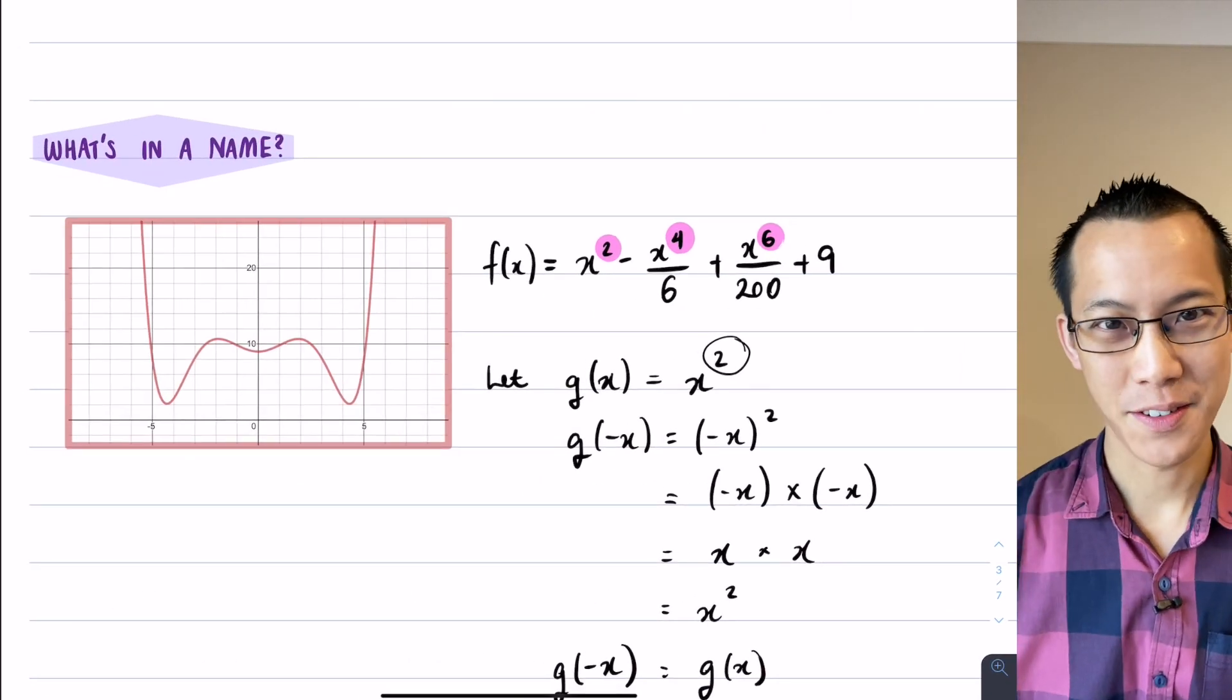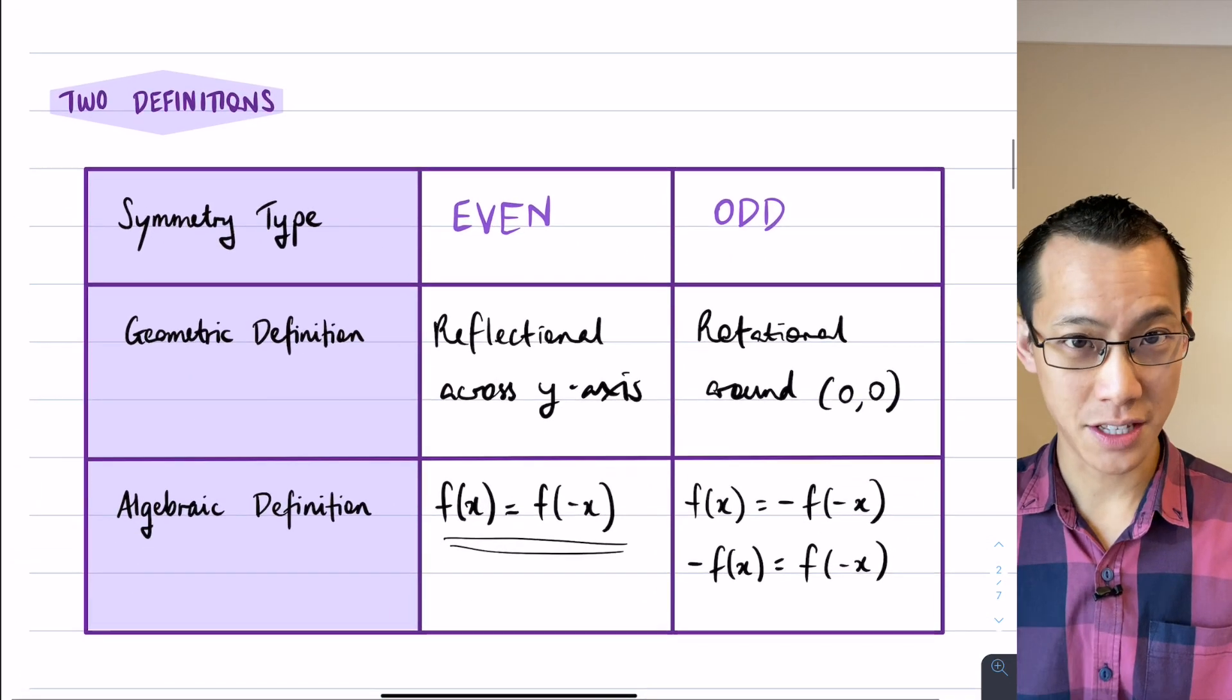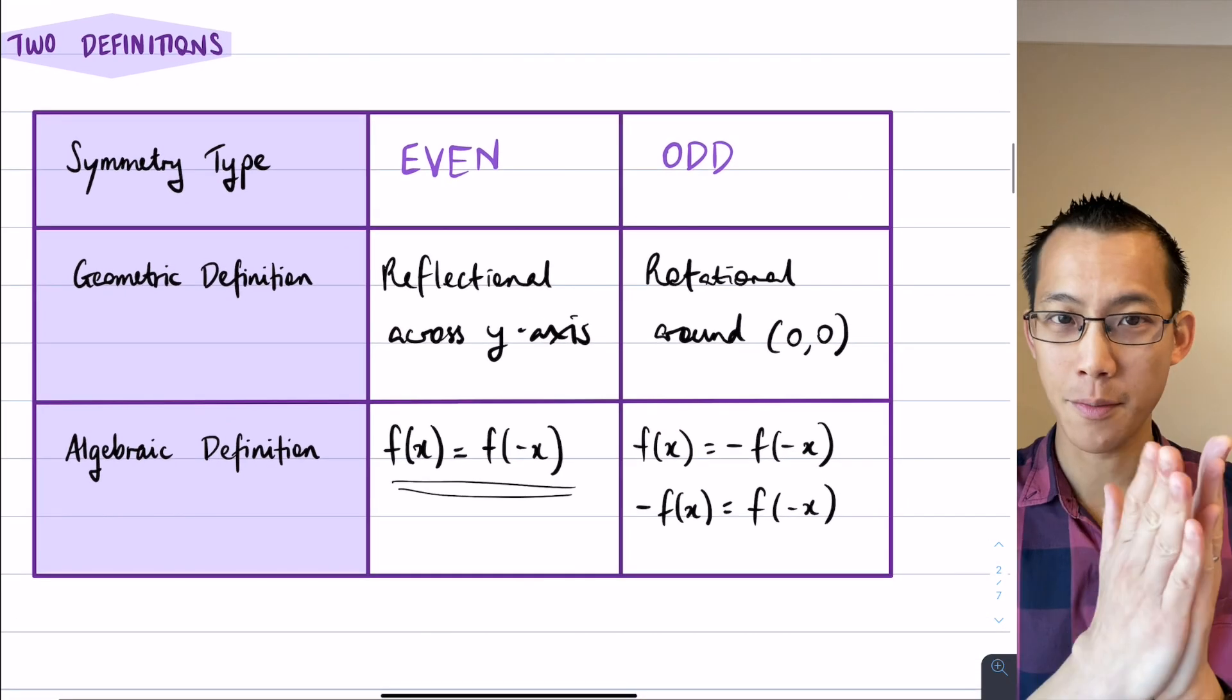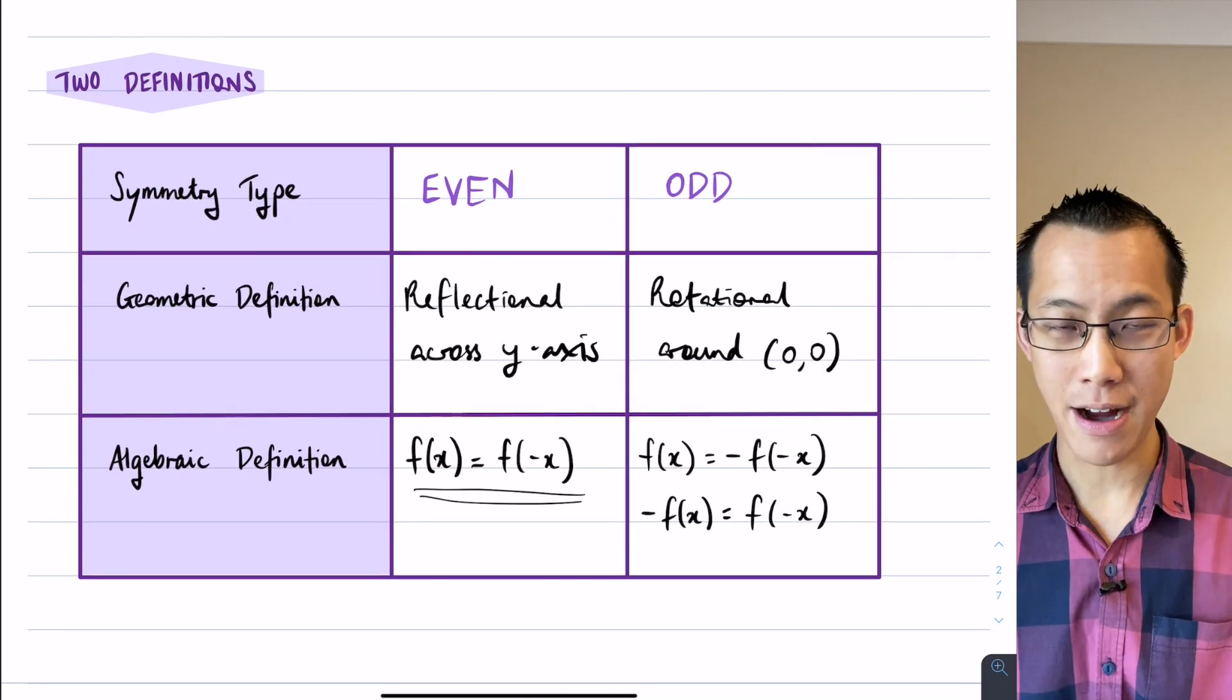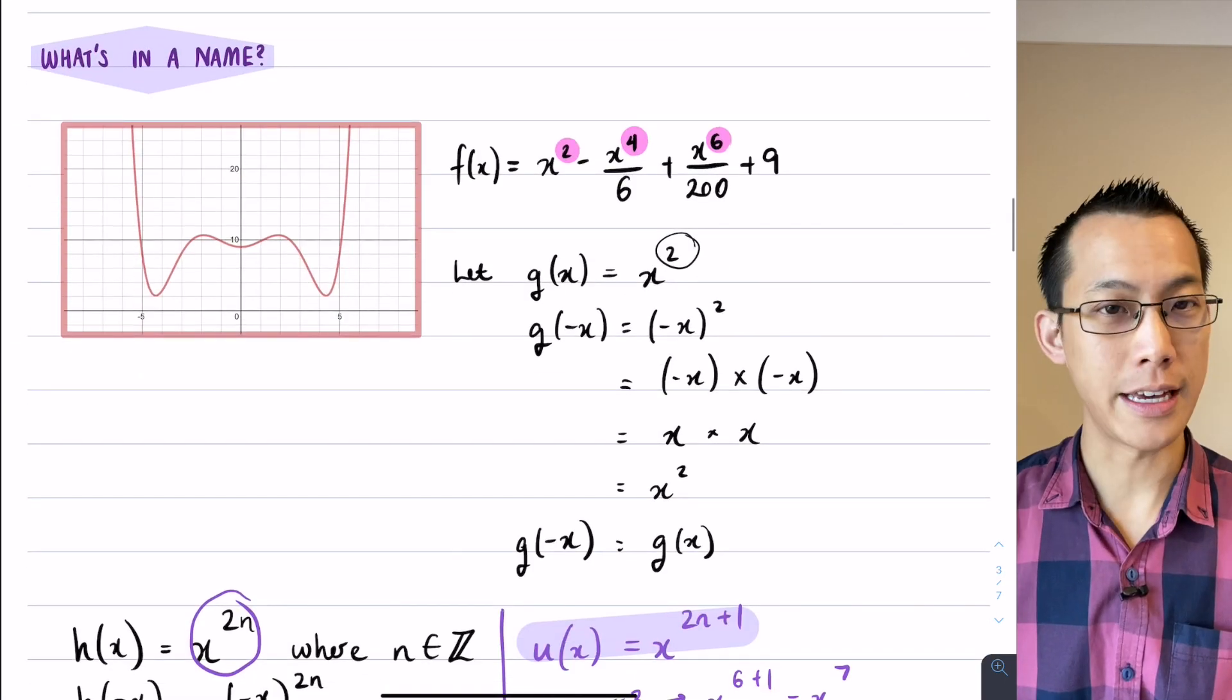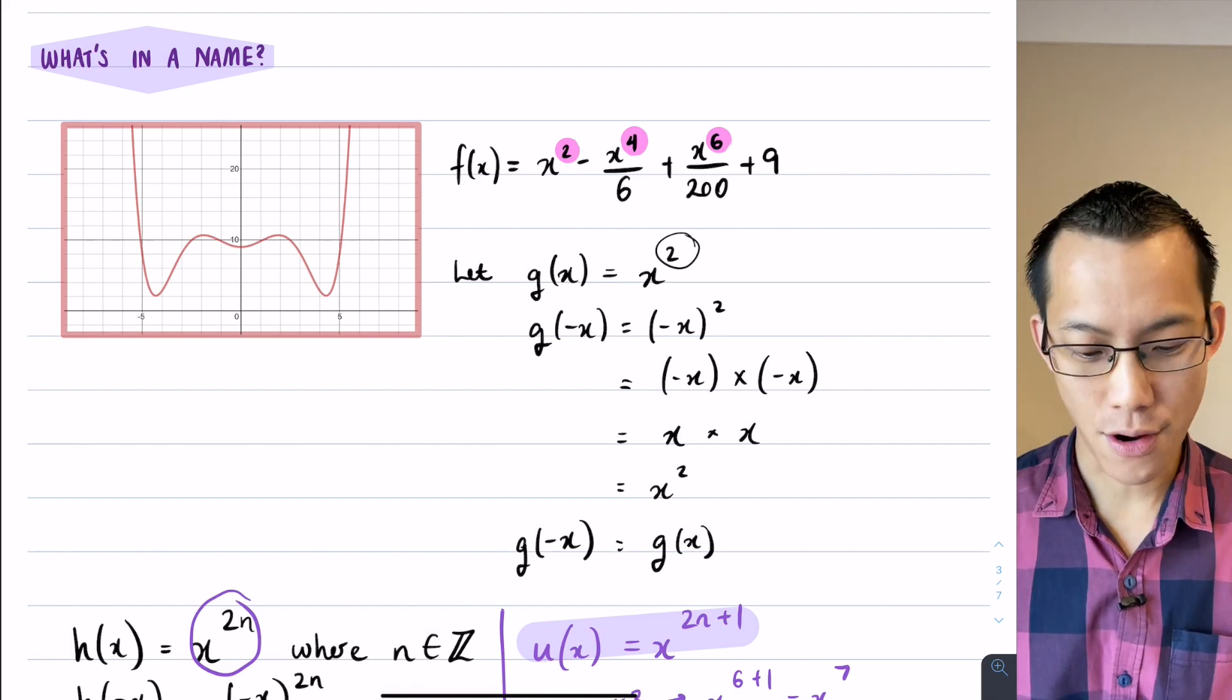Alright, so what have we looked at so far? We've introduced the basic idea. I've given you these definitions from a geometric point of view and also from an algebraic point of view, and then we've seen how you can use that algebraic definition to prove some things. We can prove why even functions are called even functions and the same for odd functions.